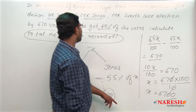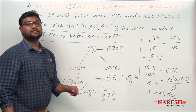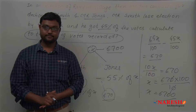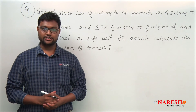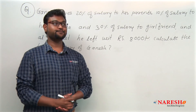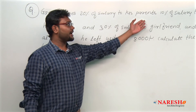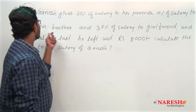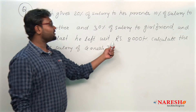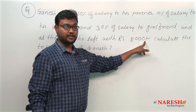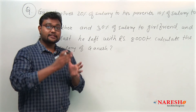So in Rampur village there were 6700 votes. This is how to tackle this kind of question. The next question is quite different compared to the first two, but the concept is the same. Ganesh gives 20 percent of his salary to his parents, 10 percent of his salary to his brother, and 30 percent of his salary to his girlfriend.